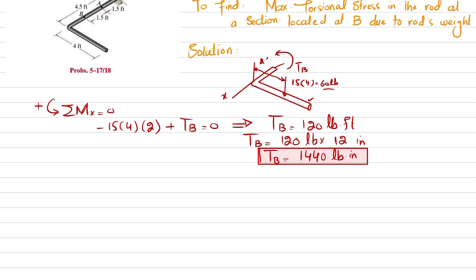We use this torque to find the maximum shear stress at point B, which is equal to T_B times c divided by J.